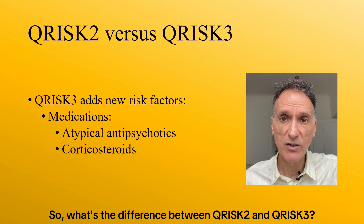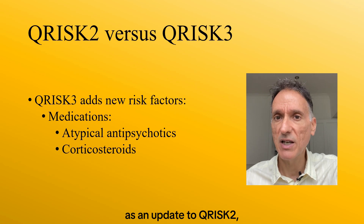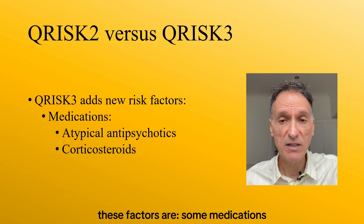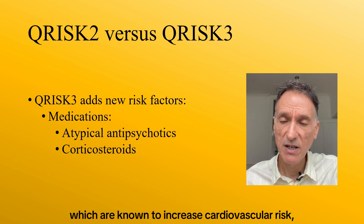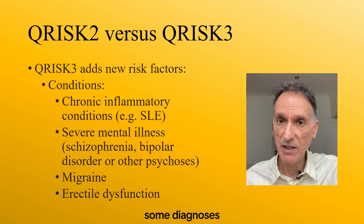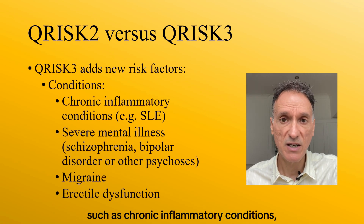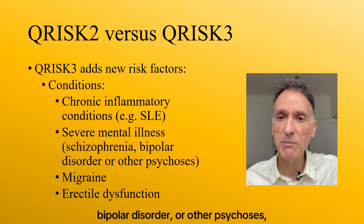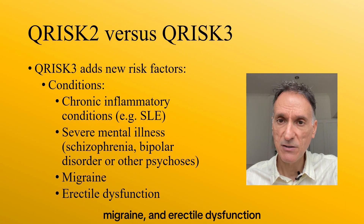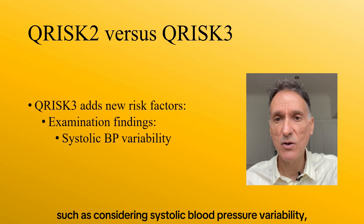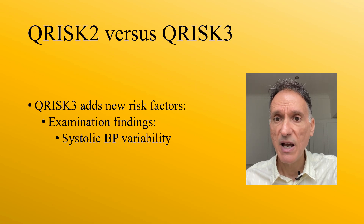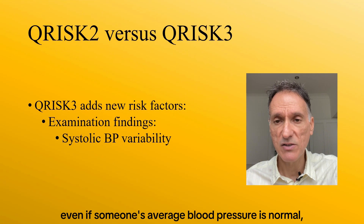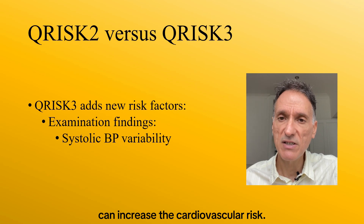What's the difference between QRISK-2 and QRISK-3? When QRISK-3 was introduced in 2017 as an update to QRISK-2, it includes all the factors in QRISK-2 but adds new risk factors to make it more accurate. These include medications known to increase cardiovascular risk such as atypical antipsychotics and corticosteroids; diagnoses linked to increased cardiovascular risk such as chronic inflammatory conditions, for example SLE, severe mental illness (schizophrenia, bipolar disorder or other psychosis), migraine and erectile dysfunction; and examination findings such as systolic blood pressure variability, because fluctuations in blood pressure are an independent risk factor for cardiovascular disease. Even if someone's average blood pressure is normal, large swings in systolic pressure over time can increase cardiovascular risk.